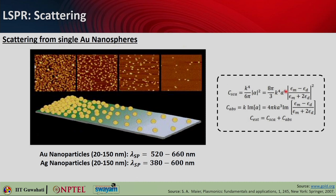The polarizability alpha gives you the scattering cross section expression. Similarly, you can find the absorption cross section, which is calculated as k times the imaginary part of alpha. The overall extinction cross section is given as the sum of scattering plus absorption cross section.